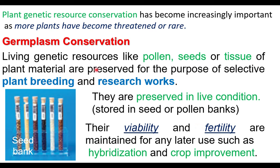The viability and fertility of seeds are maintained in germplasm conservation. A seed can survive within its viable duration; after the viable duration is completed, it does not germinate. Only fertile seeds can germinate, so this preservation maintains viability and fertility, and the preserved pollen, seeds, and tissues can be used for crop improvement and hybridization.